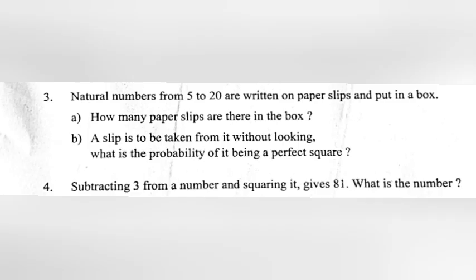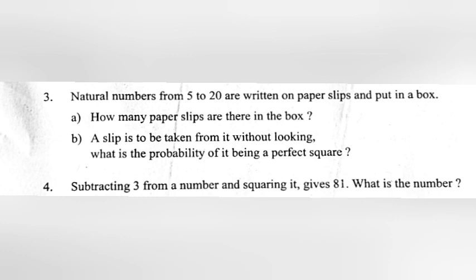Question 3: Natural numbers from 5 to 20 are written on paper slips and put in a box. Part A: How many paper slips are there in the box? Part B: A slip is to be taken from it without looking. What is the probability of it being a perfect square? Answer A: 16. B: 2/16 is equal to 1/8.